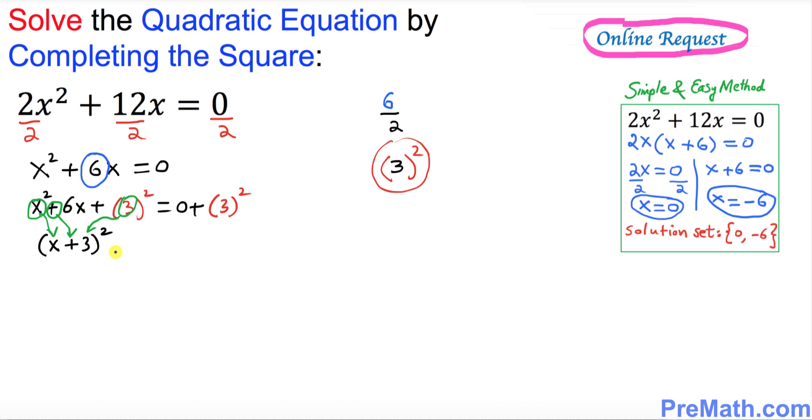Now I want you to go ahead and undo this square by taking the square root on both sides. So far so good. Once you take the square root, this square and square root undo each other. We got x plus 3 turns out to be equal to positive or negative 3.